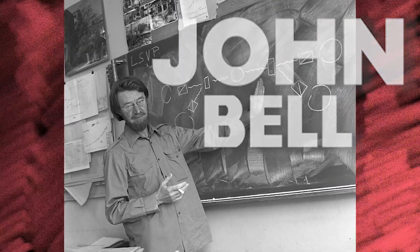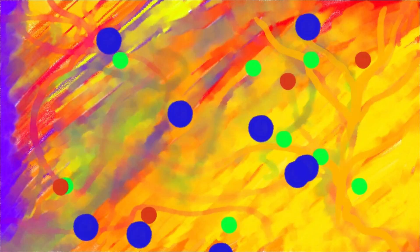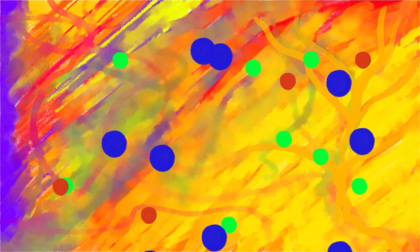Years went by and scientists kept trying to understand the strange connections predicted by quantum mechanics. John Bell, a physicist, came up with a clever way to test whether particles are truly connected in the spooky way quantum mechanics suggests, or if there is a hidden explanation we haven't found yet.